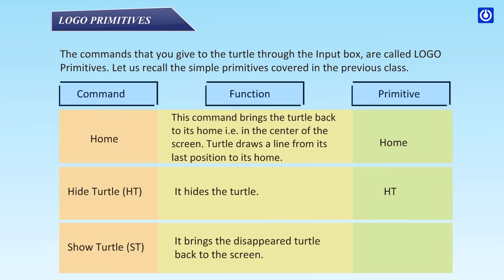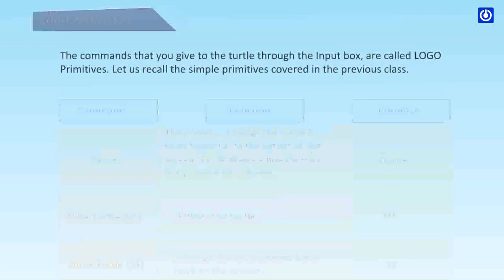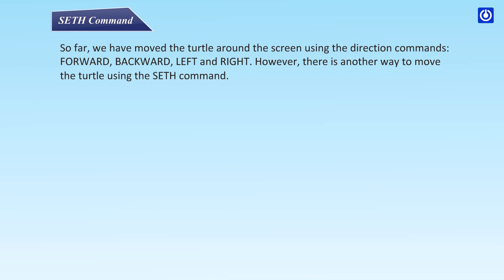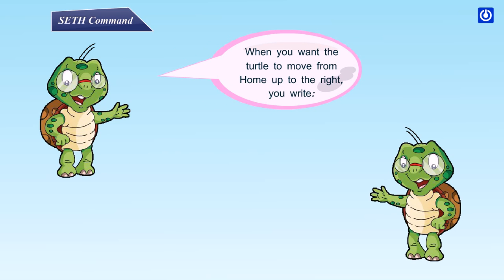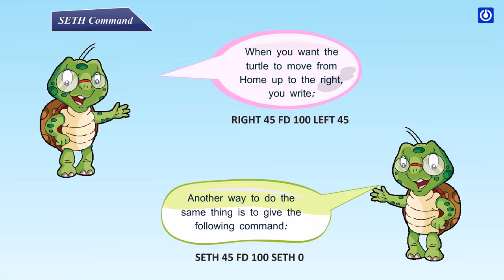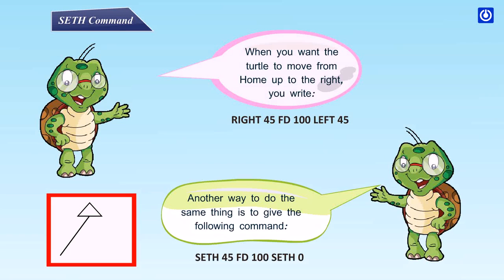So far we have moved the turtle using direction commands: forward, backward, left, and right. However, there is another way to move the turtle using the seth command. For example, when you want the turtle to move from home up to the right, you could write RT 45 FD 100. Another way to do the same thing is to give the command: seth 45 FD 100 seth 0.